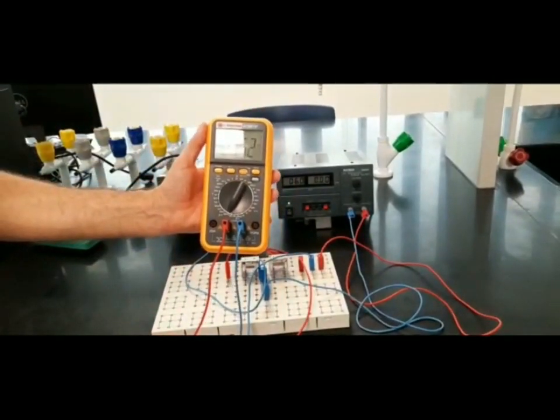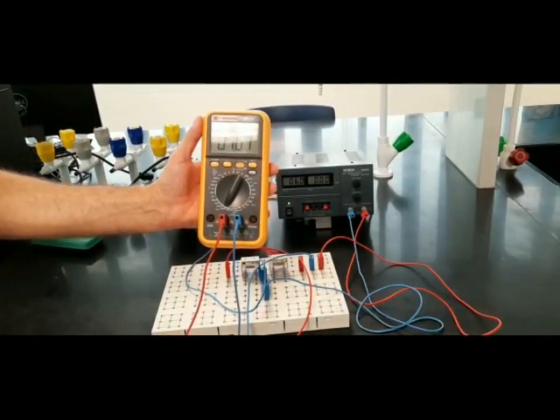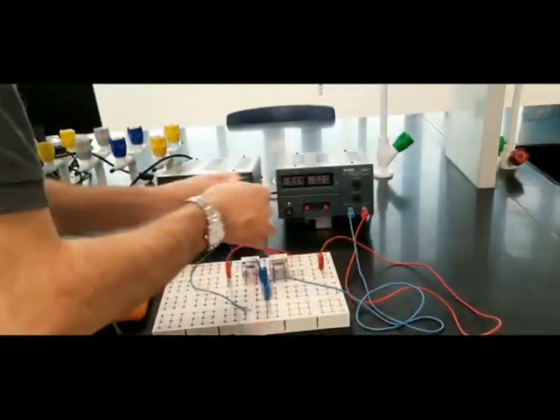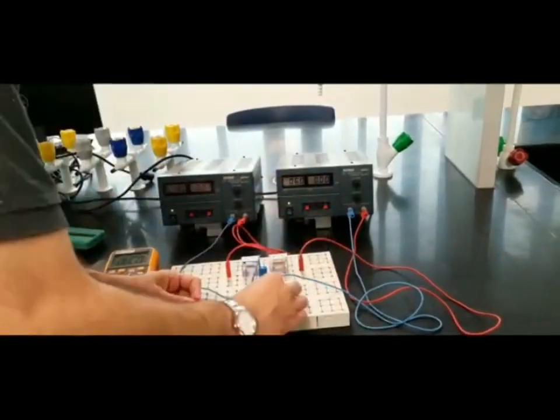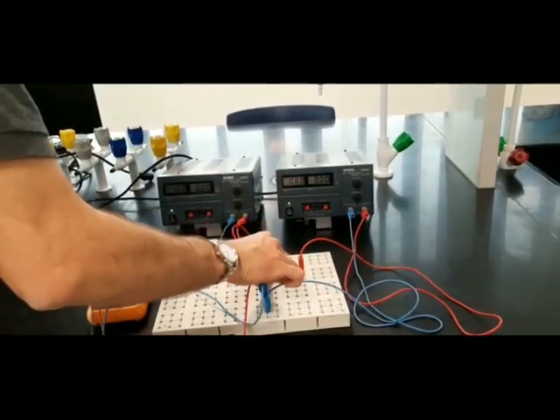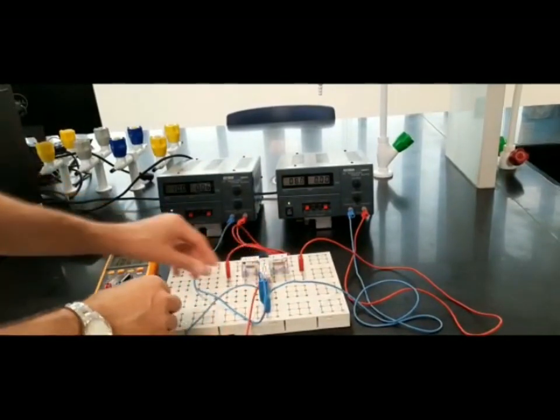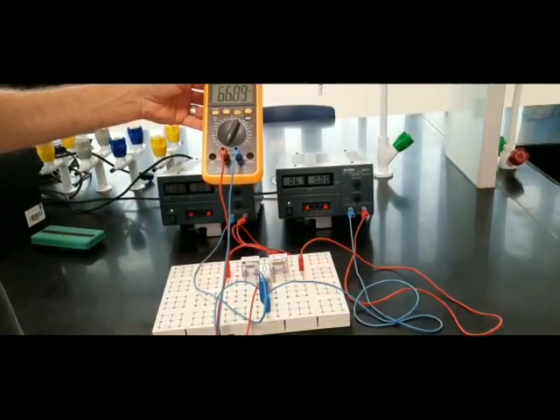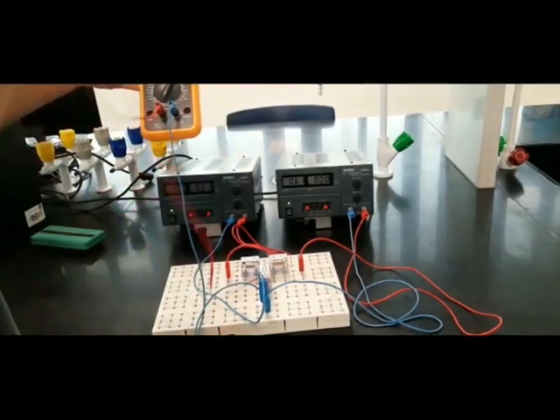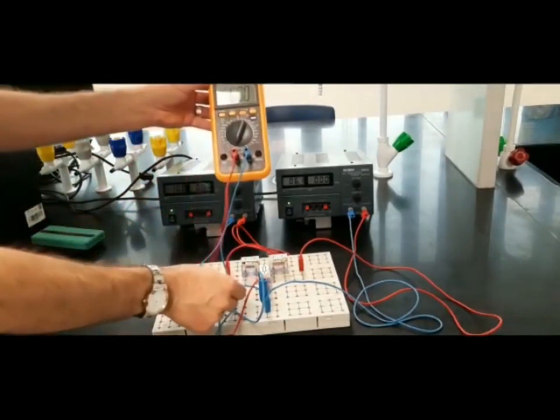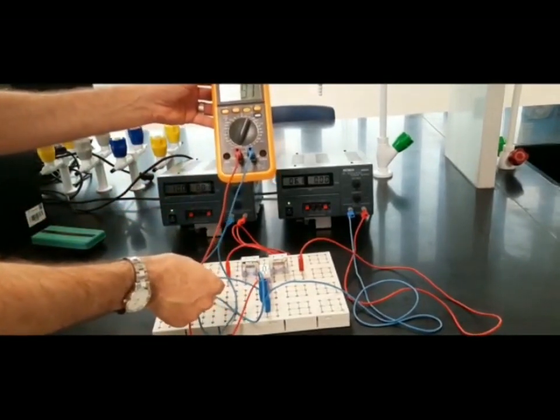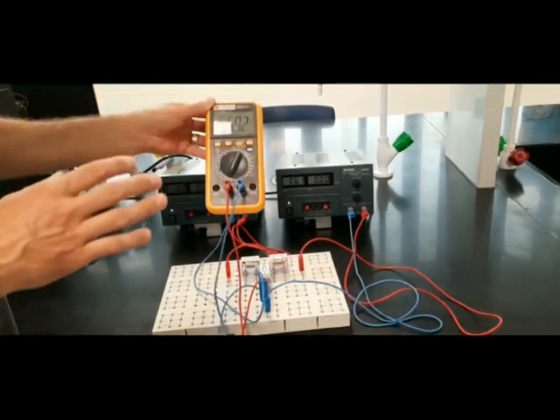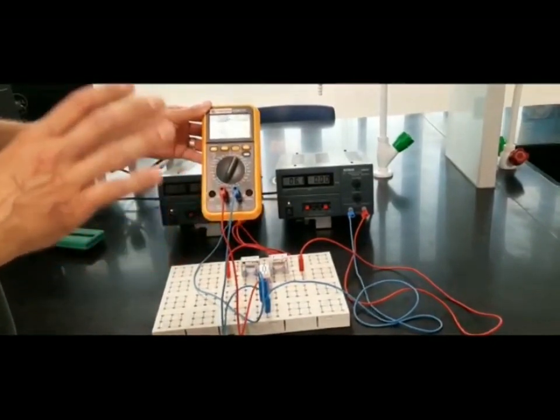Now I will go to the third resistance, R3. Connecting the ammeter in series, it says 66.89 milliamperes. The positive terminal is up, the negative terminal is down. These are the three values.